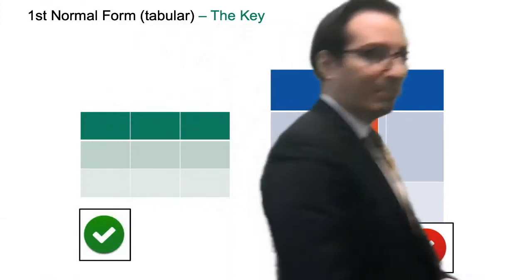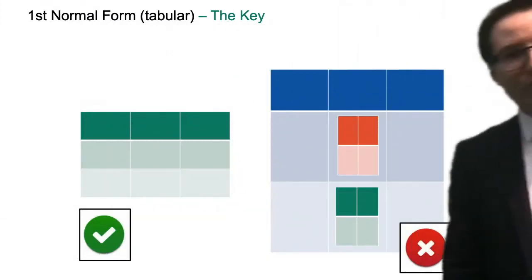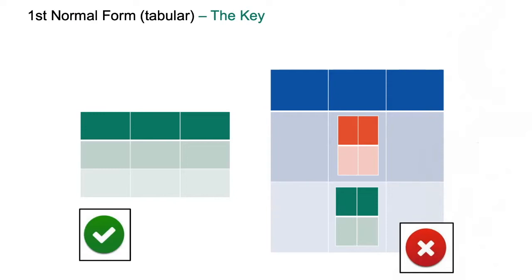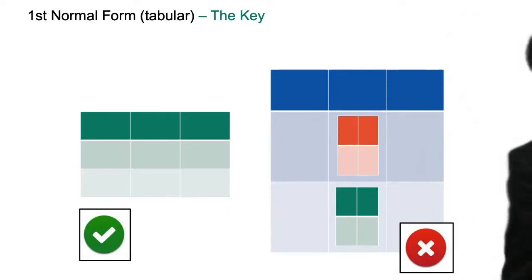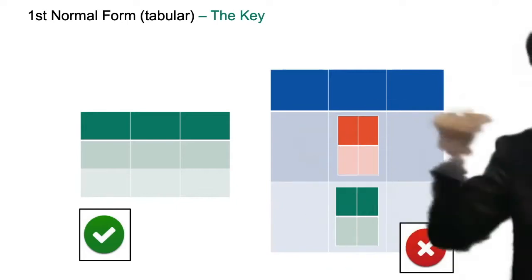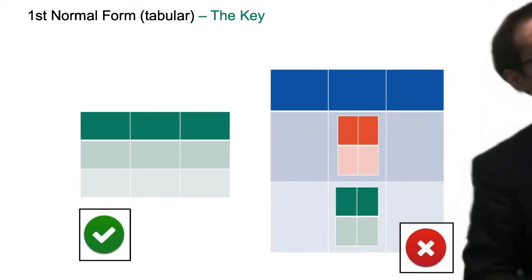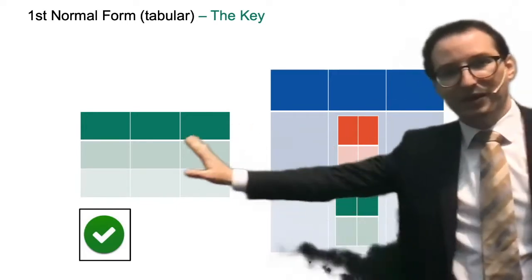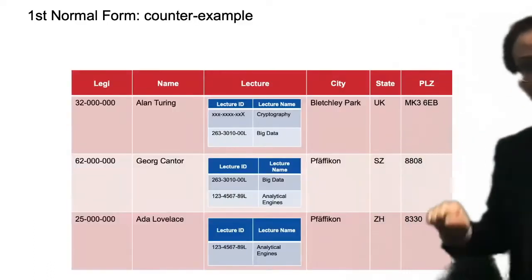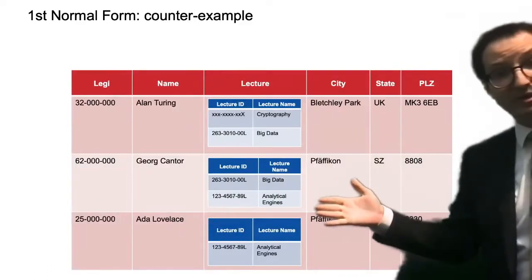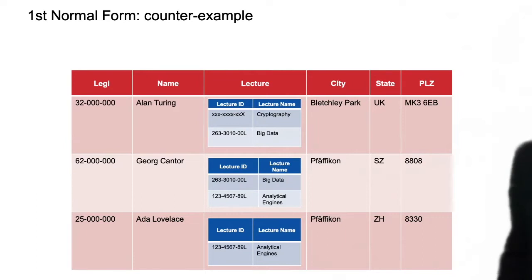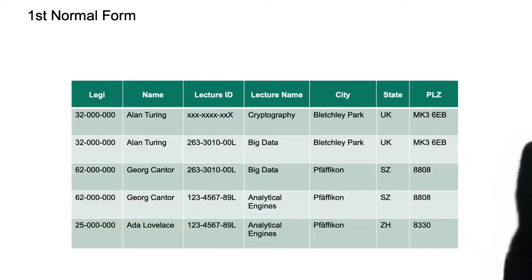The first normal form is one you already know — it is atomic integrity. When I said you do not accept a table inside a table, that is the first normal form. Nesting is forbidden. All values must be atomic.